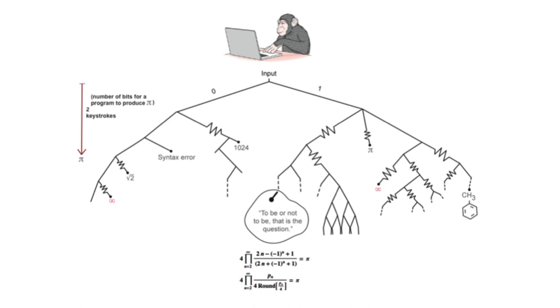What algorithmic probability tells, for example, is that it is way easier to reproduce something such as life and humans to produce something like Hamlet in, as we know, much less than the age of the universe as a result of a sophisticated physical, chemical and biological process than just trying to reproduce Hamlet from scratch letter by letter, which takes much longer than the age of the universe.